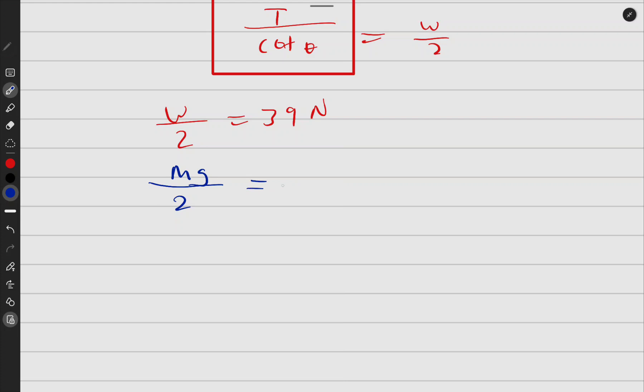You have 2 times 39 newtons divided by g is equal to mass. And you pull your calculator, and you should get something like this, and it is correct: 9.4 kg. This is the mass of the rod.